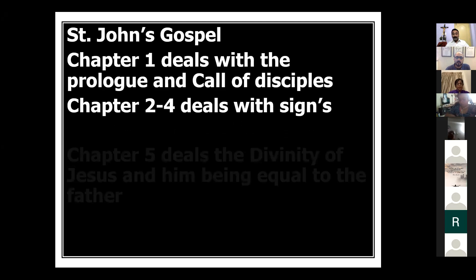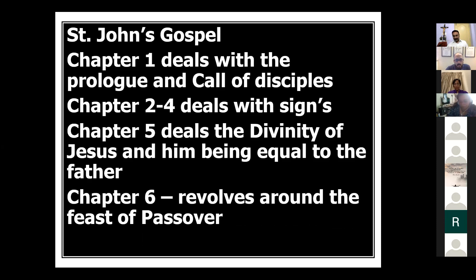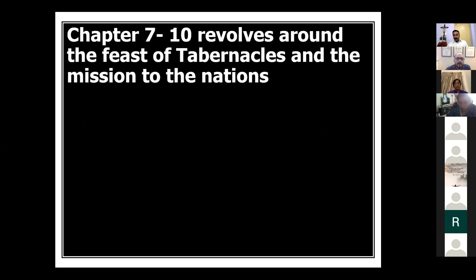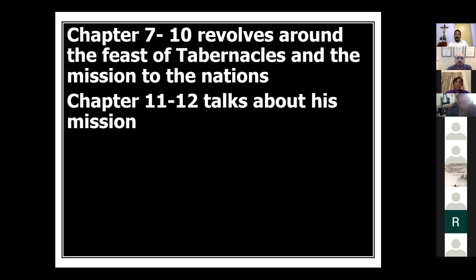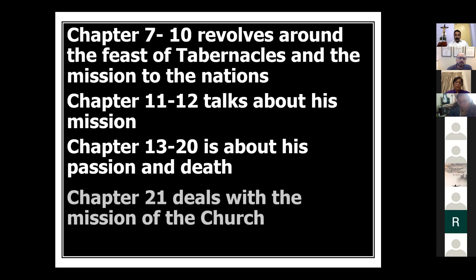Chapter two to four deals with signs. Chapter five deals with the divinity of Jesus Christ and him being equal to the Father. Chapter six revolves around the feast of the Passover. Chapters seven through ten revolve around the feast of the tabernacles — or the festival of lights — and the mission of the nations. Chapters eleven to twelve talk about Jesus' mission. Chapters thirteen to twenty cover his passion and death. And chapter twenty-one deals with the mission of the church.